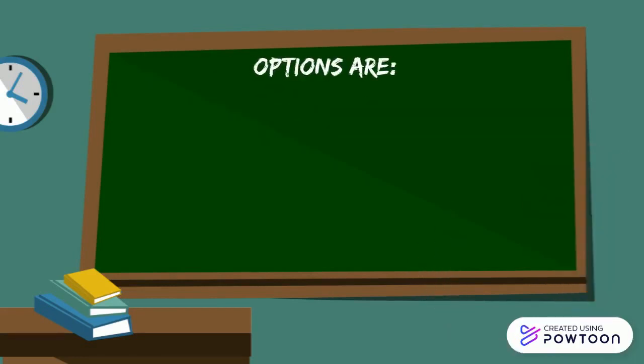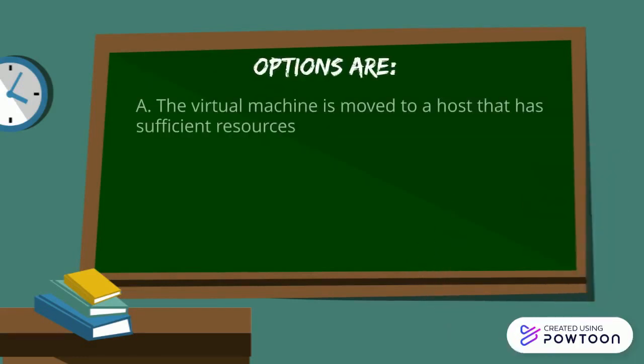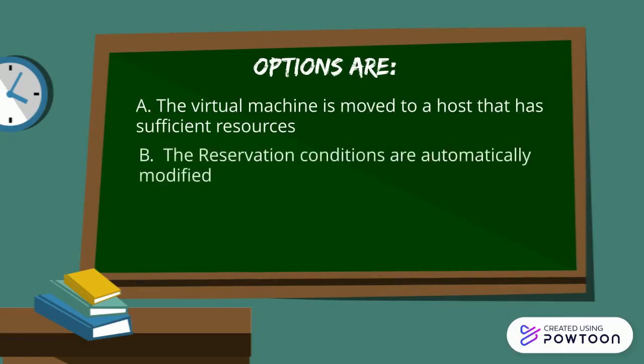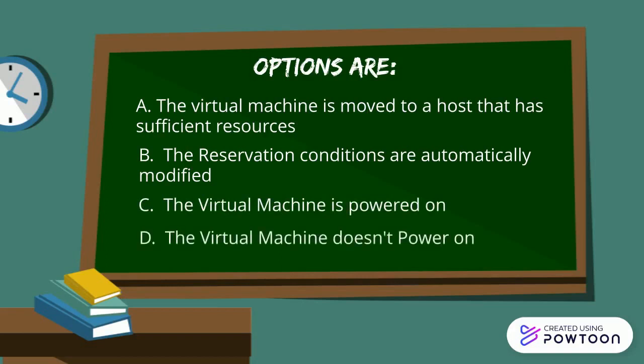Your options are: A. The virtual machine is moved to a host that has sufficient resources. B. The reservation conditions are automatically modified. C. The virtual machine gets powered on. D. The virtual machine does not power on.